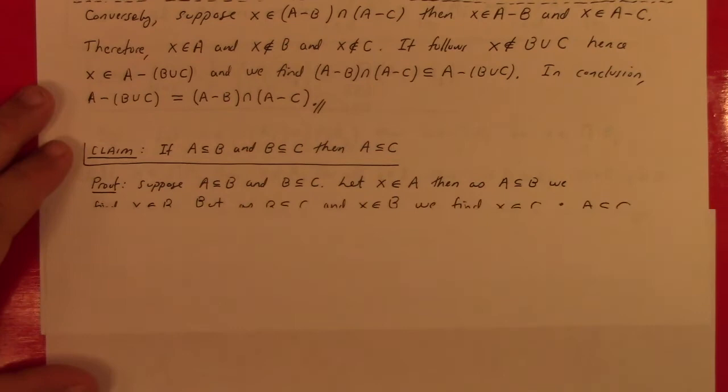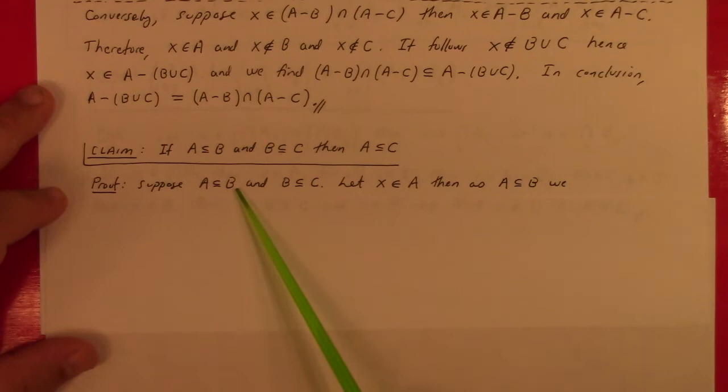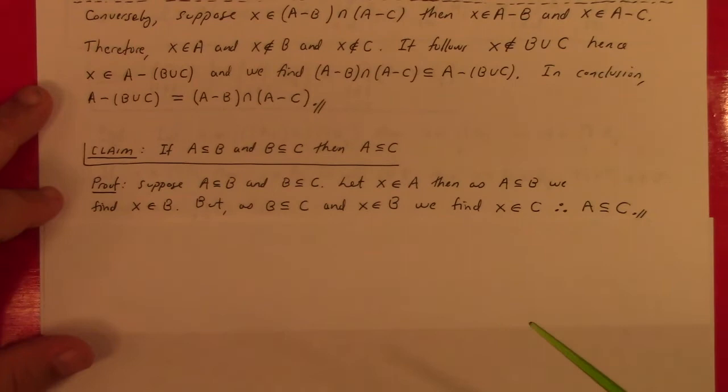Claim — transitivity of subsets: if A ⊂ B and B ⊂ C, then A ⊂ C. Suppose A ⊂ B and B ⊂ C. Let x ∈ A. Since A ⊂ B, x ∈ B. Since B ⊂ C and x ∈ B, x ∈ C. Therefore by definition A ⊂ C, since I took an arbitrary x in A and proved it was in C.